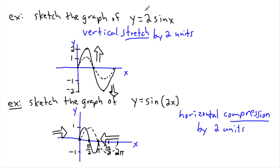A student might ask: how do you get a vertical compression instead of a stretch? You use a value less than 1. For example, y = 0.5·sin(x) compresses it, since multiplying by 0.5 is like dividing by 2. So to recap: sin(2x) has the 2 inside the bracket, so it's horizontal and does the opposite — a compression. The 2 outside the function gives a vertical stretch, and it works exactly as you'd expect: 2 makes it twice as tall, 5 makes it five times taller, and 0.5 halves it.